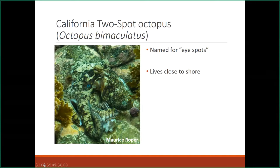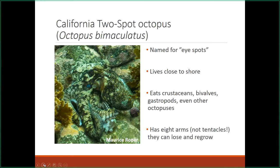They live really close to the shore. I usually catch them above 30 feet deep, so they're pretty shallow for marine dwellers. Like I said, they eat all kinds of marine invertebrates, other octopuses, and even fishes sometimes. And they have eight arms, not tentacles. I'll tell you the difference between tentacles and arms in a second. But they can actually lose and regrow those arms, and that is what interests me.